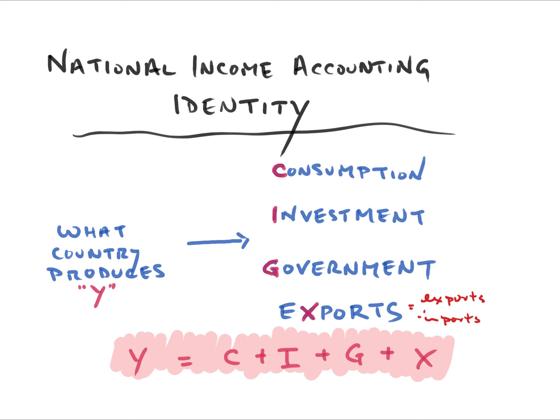If consumption of a country grows and income doesn't change — what the country produces doesn't change — it means one of the other things has to go down. If people in a country consume more, it means they have less money to invest in the future, or the government has fewer resources it can purchase, or the country is importing more than it exports.